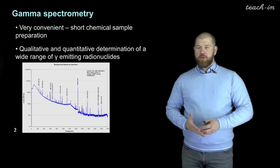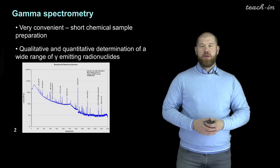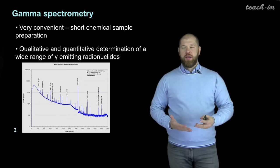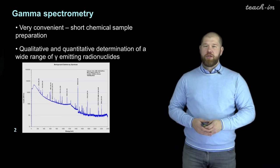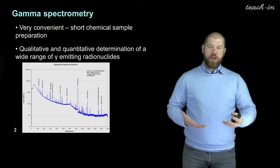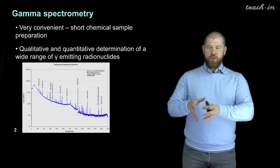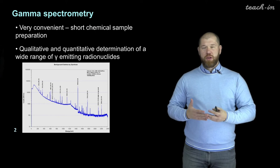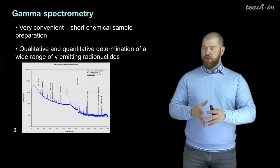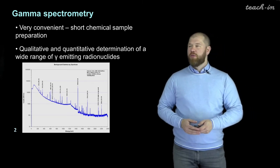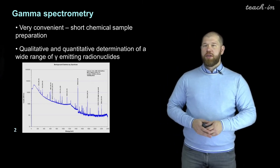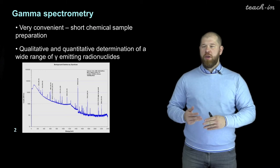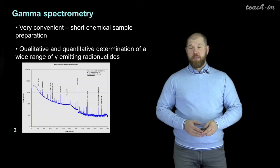First of all, gamma spectrometry is a very convenient method for measuring gamma-emitting radionuclides in samples because it doesn't require any complex chemical preparations. It just requires drying to the constant mass of your sample, and then you put it on the detector and measure your sample. It doesn't require chemical procedures like dissolution of the sample, evaporation, extraction, or any other chemical procedures.